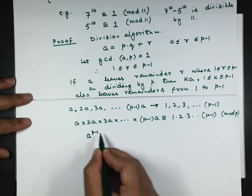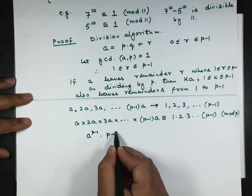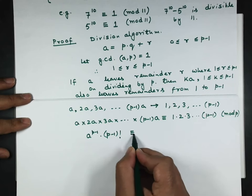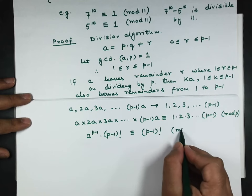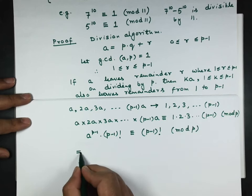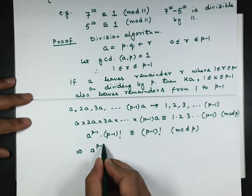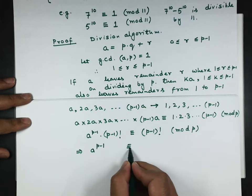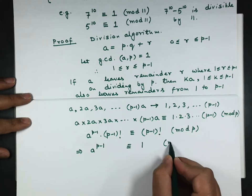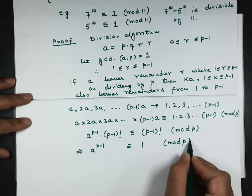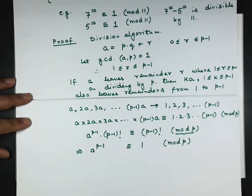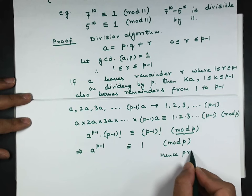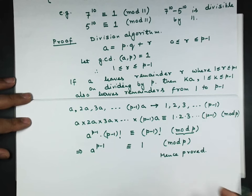Hence a^(p-1) × (p-1)! leaves remainder (p-1)! modulo p, which in turn becomes a^(p-1) ≡ 1 (mod p), as p cannot divide (p-1)! Hence proved. Thank you.